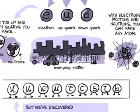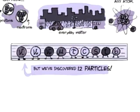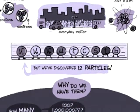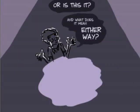But how many particles are there that we've discovered? Twelve? Why did we have them? I don't know. How many are there? A hundred? A million? Only twelve? We don't know. We're like looking at the tip of the iceberg here and wondering, is there a huge iceberg under the water, or is this it? And what does it mean in either way?